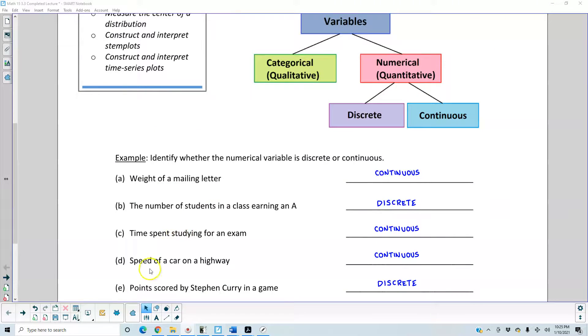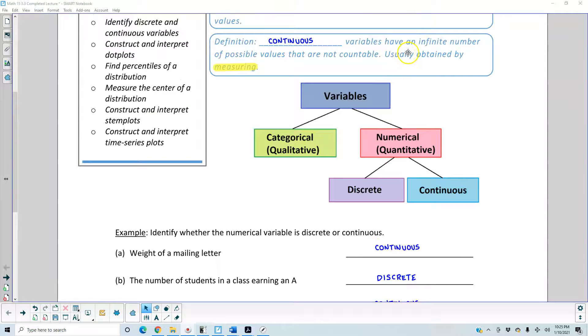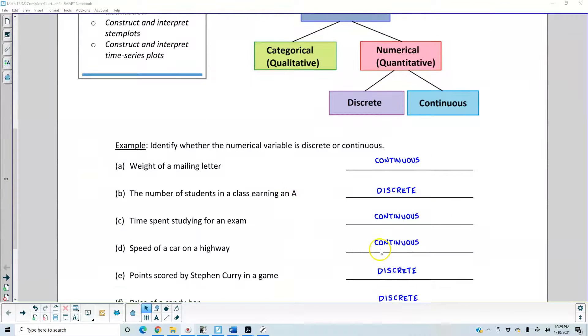Part D: Speed of a car on a highway. This is also continuous. Again, this has an infinite number of possible values that are not countable. The speed of a car can represent different speeds, so it's continuous.